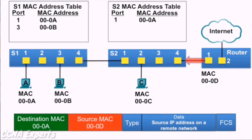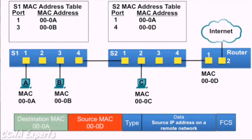The frame is sent to switch S2. S2 receives it, examines the source MAC address, which is in its MAC address table, and forwards it out port 1.